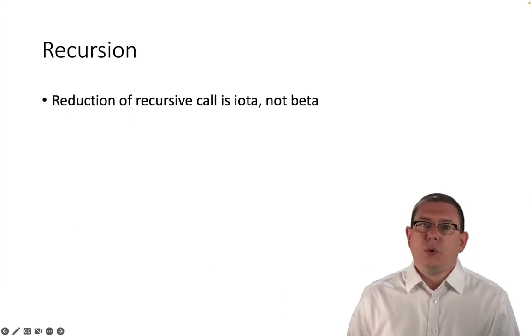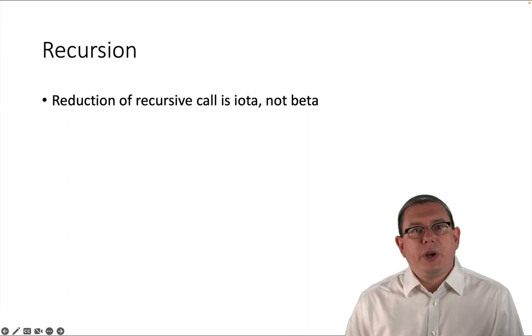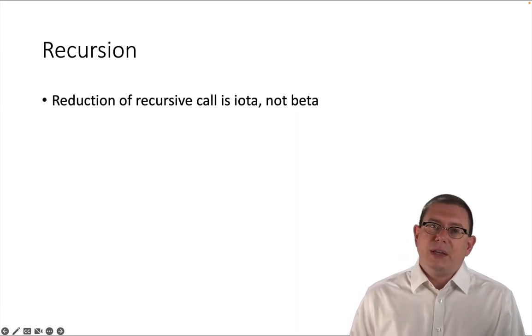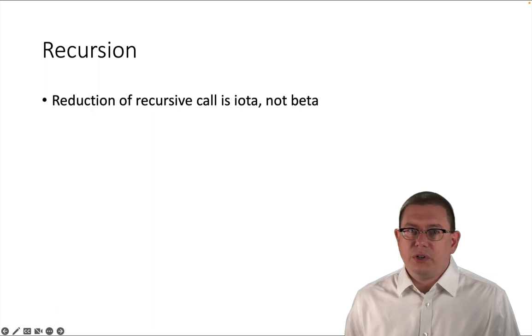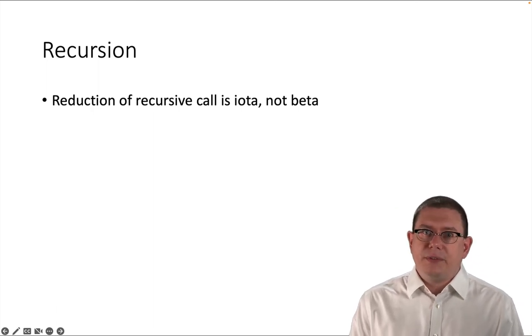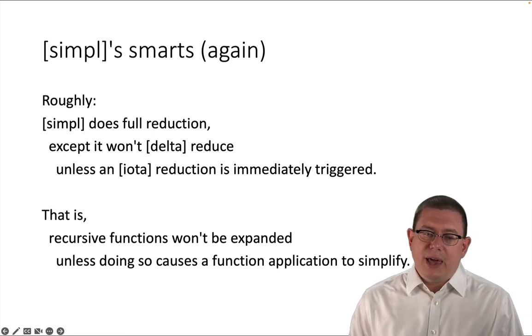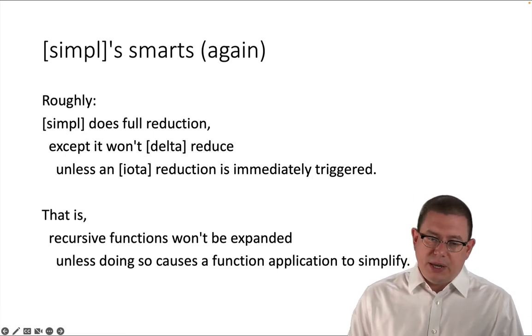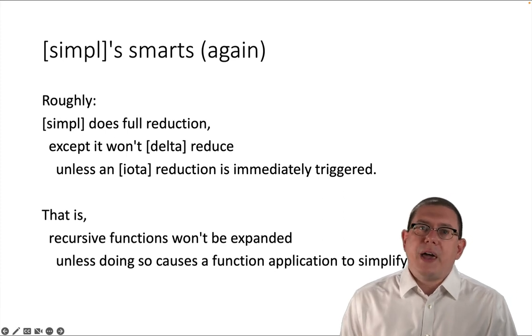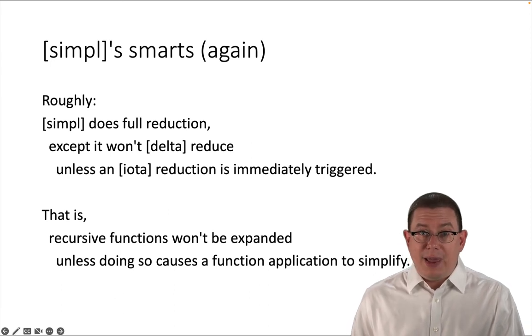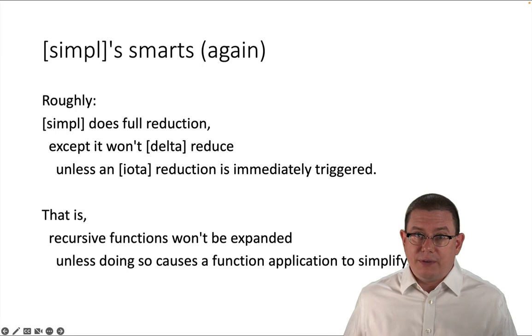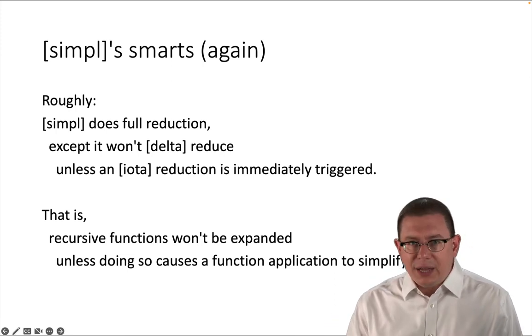There's one other piece to this though, which is, as I mentioned earlier, reduction of a recursive function call or function application is actually considered to be an iota reduction, not a beta reduction. It's iota because it's about an inductive type. You're doing a recursive call on that inductive type or on a value of that inductive type. So going back to this again, that simple does full reduction, except it won't delta reduce unless an iota reduction is immediately triggered. Specifically, what that means for recursive functions is a recursive function application is not going to be expanded. You're not going to expand the name of that function there to its definition unless doing so actually causes that function application to simplify.